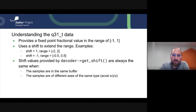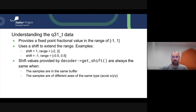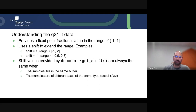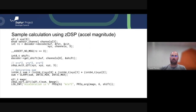The shift value is provided by decoder_get_shift. The decoder contract guarantees that all samples in the same buffer will always have the same shift — meaning multiple frames of accelerometer X will have the same shift value, and accelerometer X and accelerometer Y will always share the same shift value. This guarantee makes using the DSP library much more convenient since you don't have to re-align all your data before performing arithmetic.